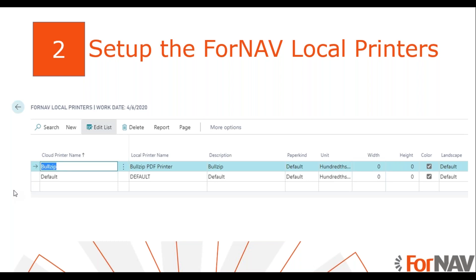Before we can select the printers, we first need to set up the Fornav local printers. In this setup screen, we can set up our local printers with their settings. We can set up things like paper kind, paper source, and many more. I will use both the default printer and the specific printers set up on my PC.